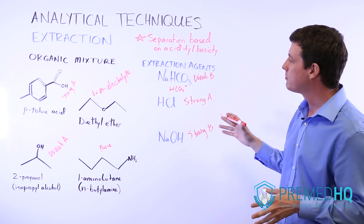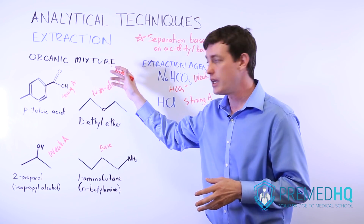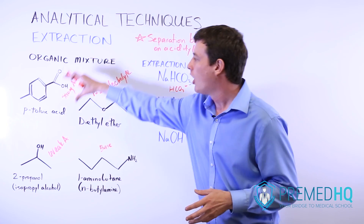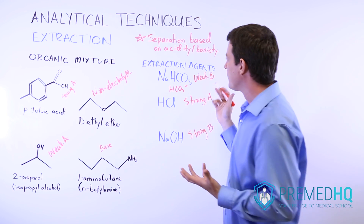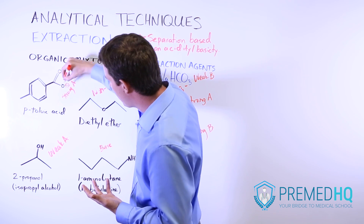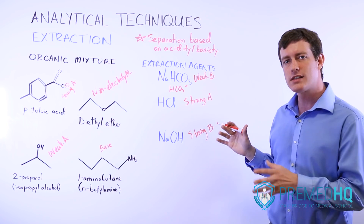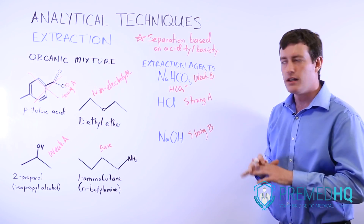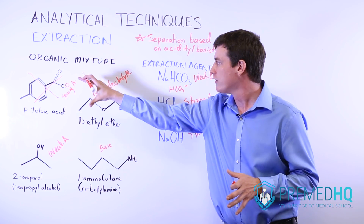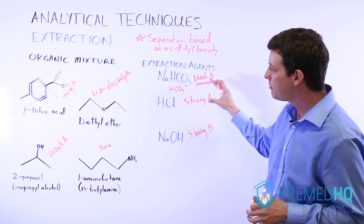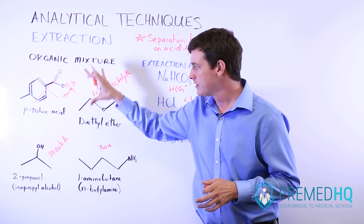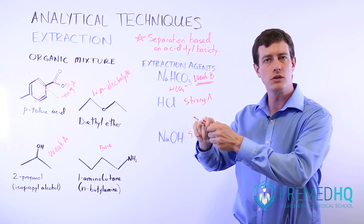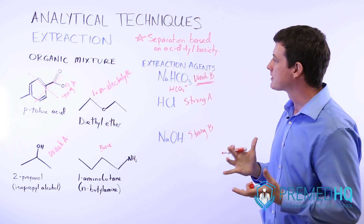Because HCO₃⁻ is a weak base, it will preferentially deprotonate our strong acid without deprotonating the isopropyl alcohol. So first we pour through our weak base — sodium bicarbonate mixed with water — and what happens is the p-toluic acid is deprotonated. It now has a negative charge, and as soon as it gets that charge, it enters the aqueous layer. We've taken one thing out of that mixture by using the weak base. We then go in and remove that aqueous layer through the valve.